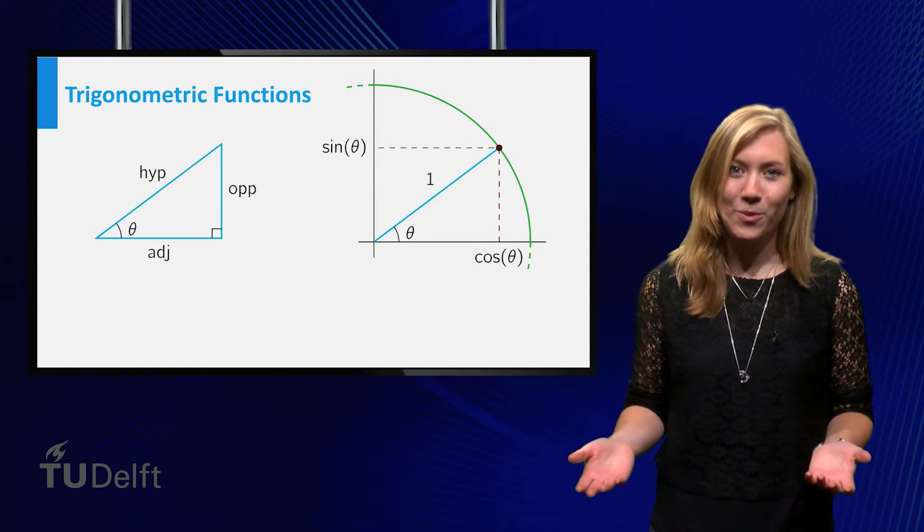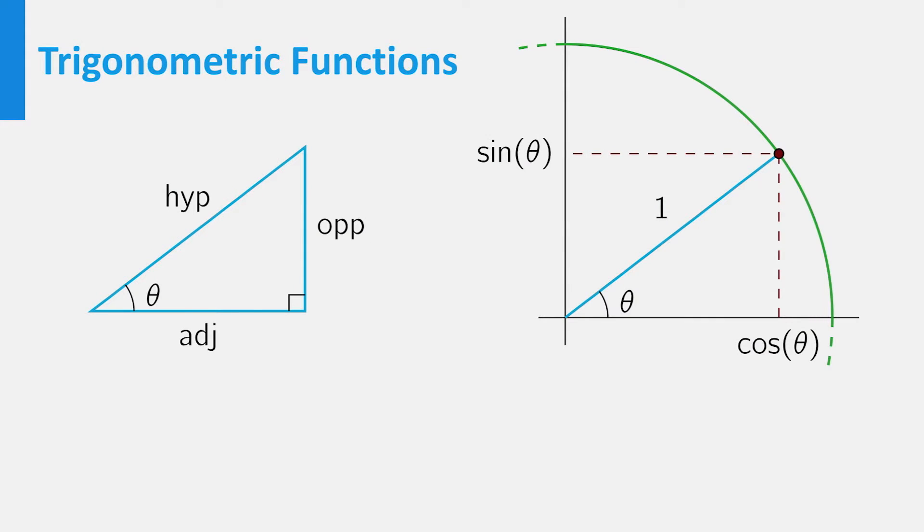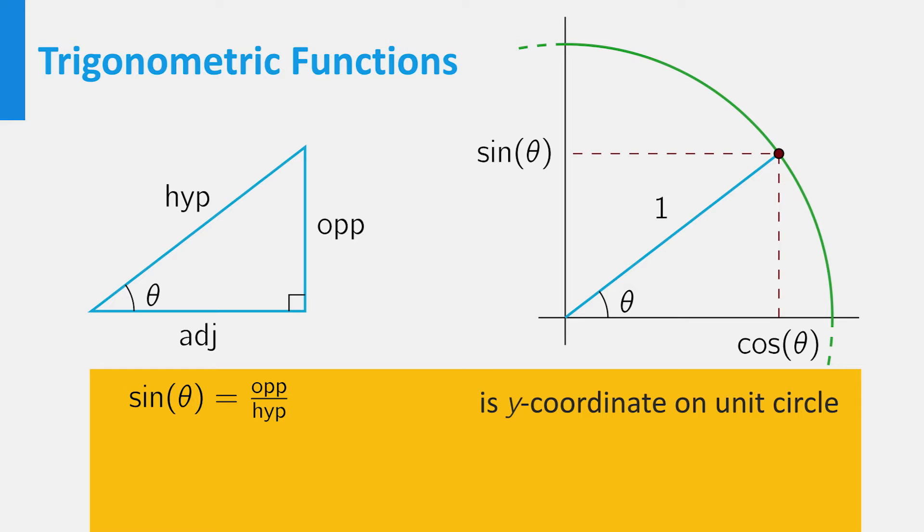In a right-angled triangle with angle theta, the sine of theta is equal to the quotient of the opposite side and the hypotenuse. In the unit circle it is the y-coordinate of a point rotated counter-clockwise over an angle theta from the positive x-axis.